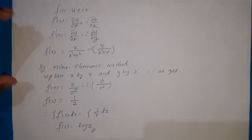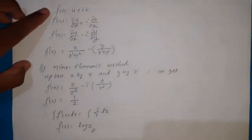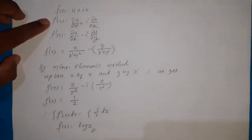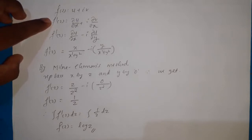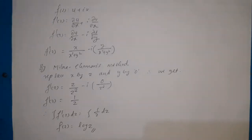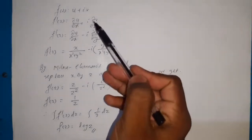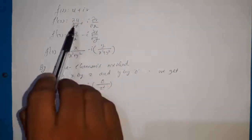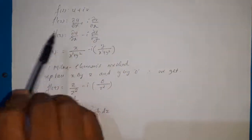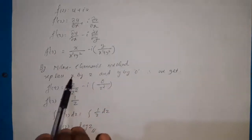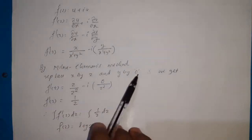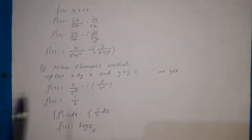This is the procedure to find the analytic function. First consider f(z) = u + iv, then write f′(z). If u is given, replace ∂v/∂x using CR equations; if v is given, replace ∂u/∂x = ∂v/∂y. Then substitute x = z and y = 0 to get f′(z) in terms of z, and integrate to get the required analytic function.